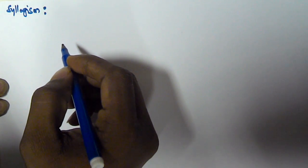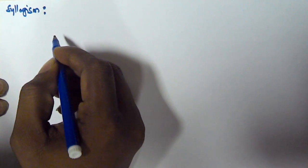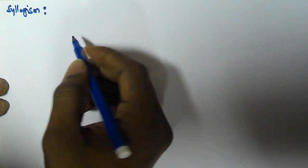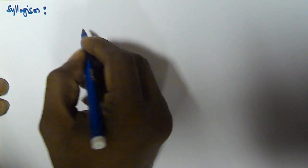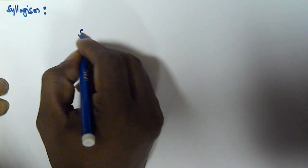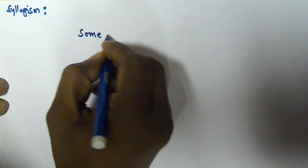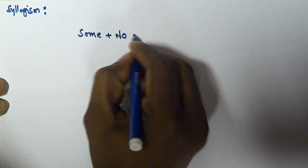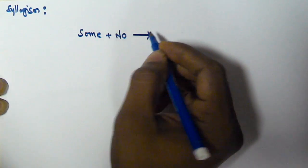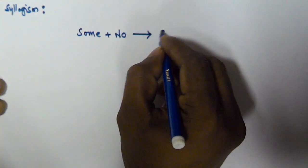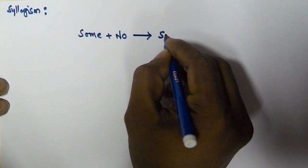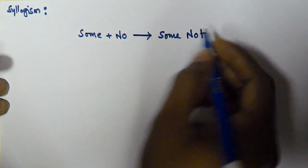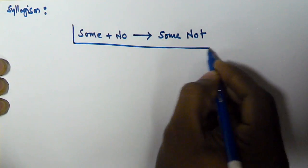Hello friends, in this video we will see another rule to solve syllogism related problems. The rule is: some plus no will give some not. Some plus no will give some not.